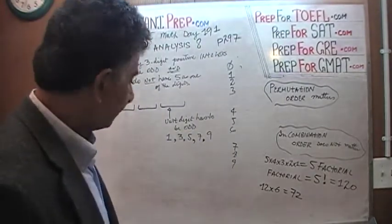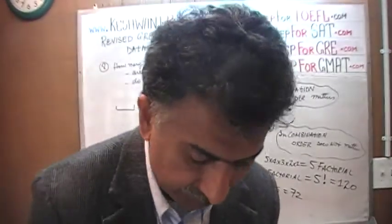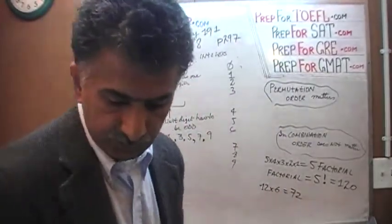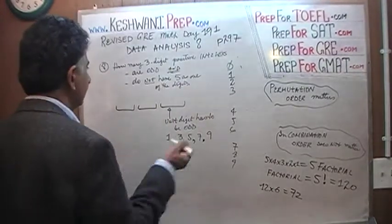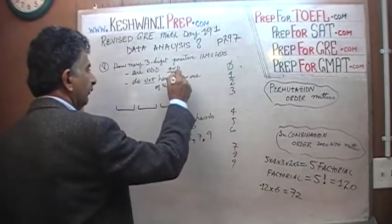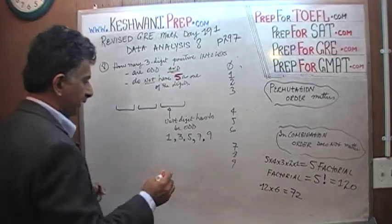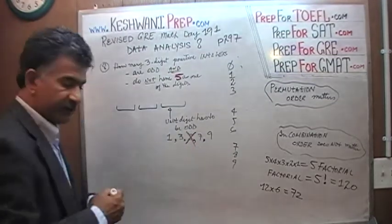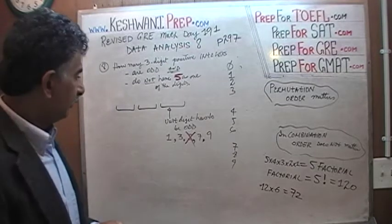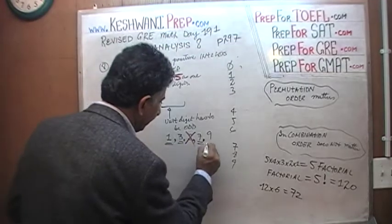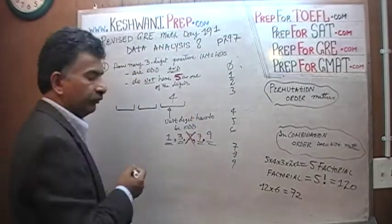The second condition that we have is that this entire 3-digit integer cannot have 5. No 5s are allowed anywhere. We can't have a 5 here or here or here. Which means there are only 4 ways to fill this last spot.